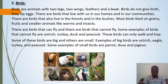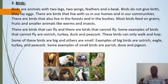The next category of animals is birds. Birds are animals with two legs, wings, feathers, and a beak. Birds do not give birth; instead they lay eggs. There are birds that live with us in our homes and communities, and there are birds that live in forests and bushes. Most birds feed on grains, fruits, and smaller animals like worms and insects.